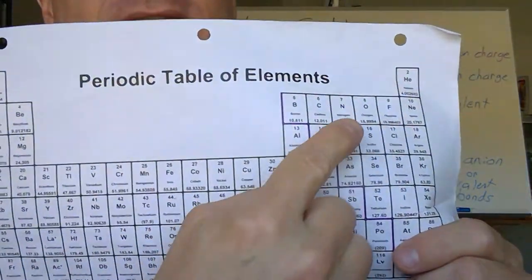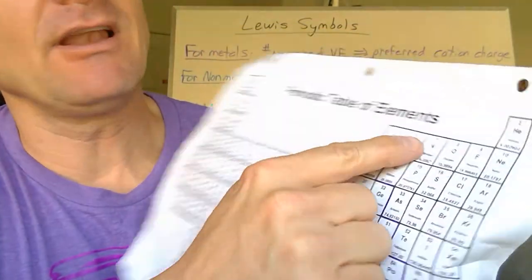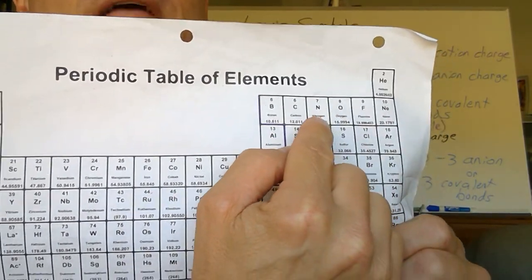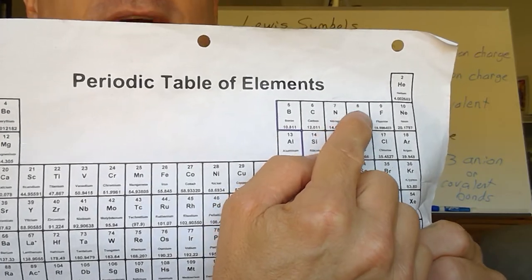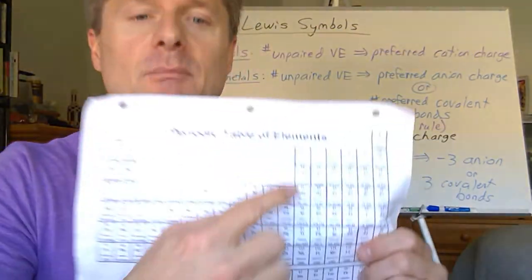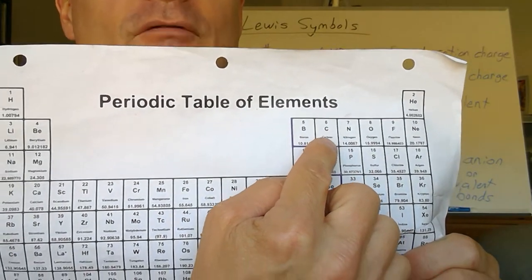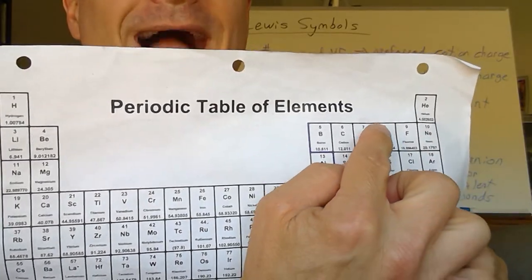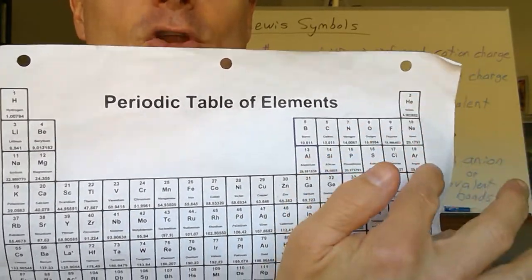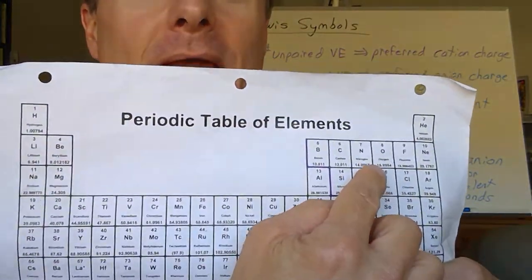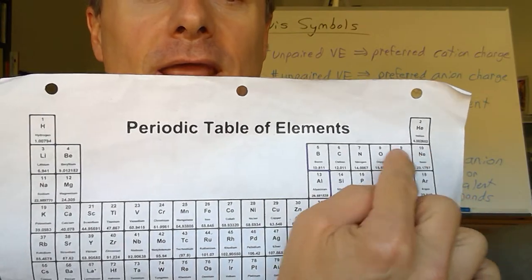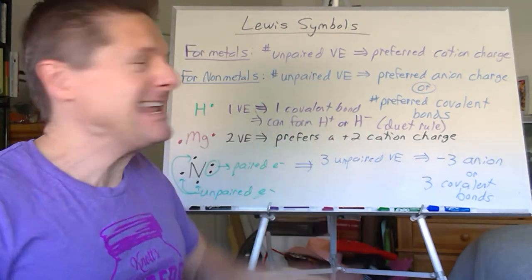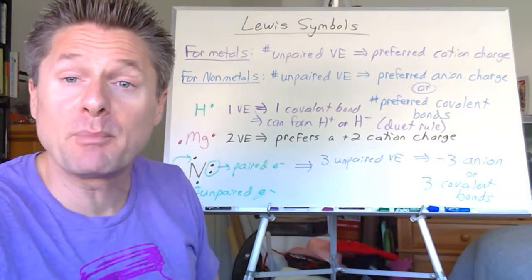The shortcut is to just look at the periodic table: count how far an element is from the nearest noble gas to get the preferred charge or number of covalent bonds. Carbon (group 4A) wants four covalent bonds. Fluorine and all halogens want one covalent bond. Oxygen and chalcogens want two covalent bonds. Noble gases don't want any — they're already there. For anions: halogens form −1, chalcogens −2, pnictogens −3, and carbide would be −4. Easy to predict directly from the periodic table.